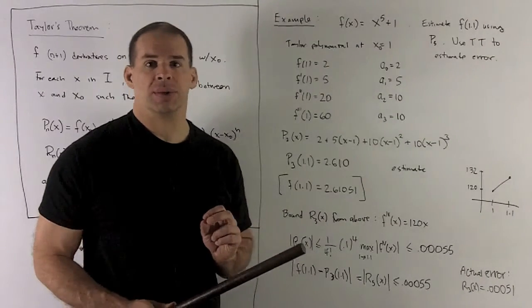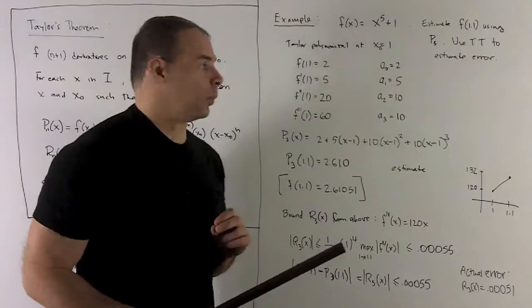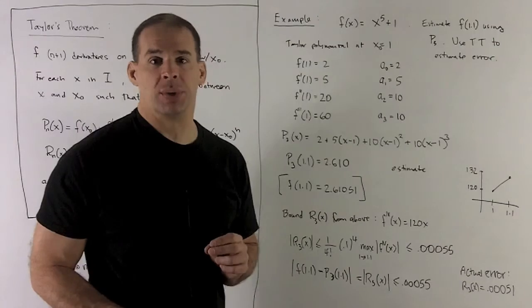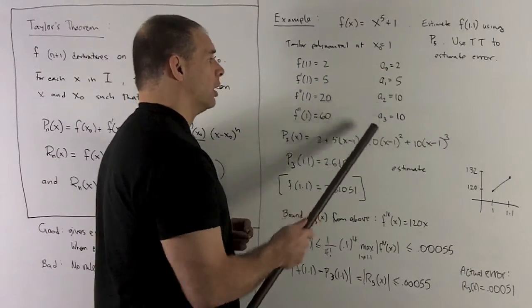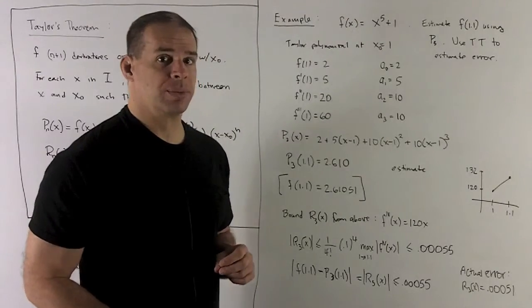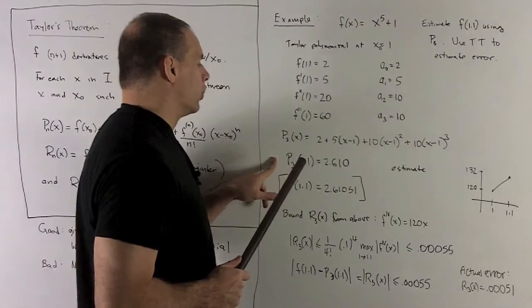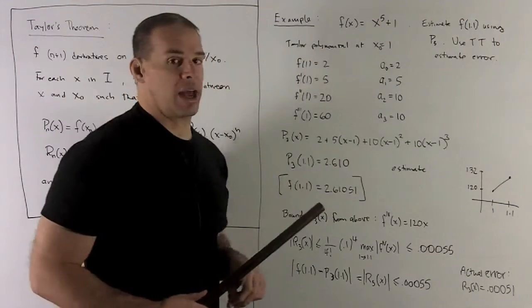Then, we're going to divide by factorials. Remember, 0 factorial and 1 factorial are both going to be equal to 1. So, these go over as is. 2 factorial is equal to 2. 3 factorial is equal to 6. So, we're going to get tens for our second and third coefficients. We load them into the polynomial as so. And then, I'm going to put my 1.1 in and see what comes out. So, I get 2.61 for our estimate.